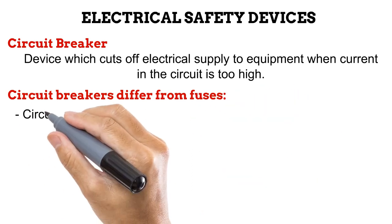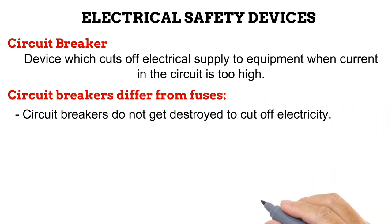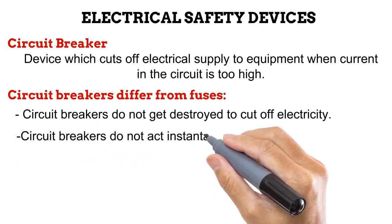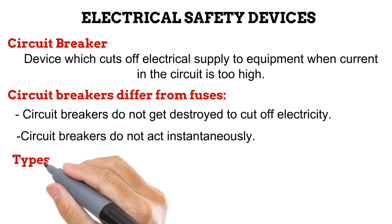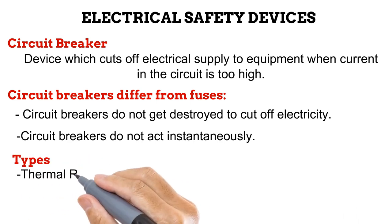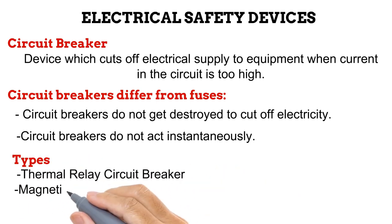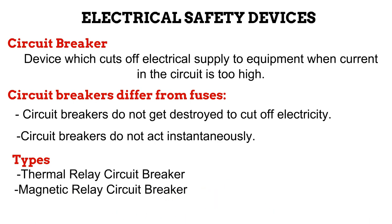Unlike the fuse, the circuit breaker does not melt or get destroyed to perform its protective function. Also, while fuses melt as soon as dangerous current enters the circuit, circuit breakers do not act immediately — they allow high current to flow for a while before cutting off the supply. The two common types are the thermal relay circuit breaker and the magnetic relay circuit breaker.